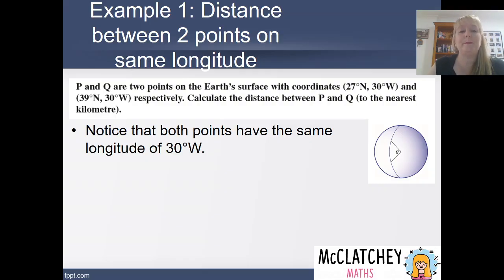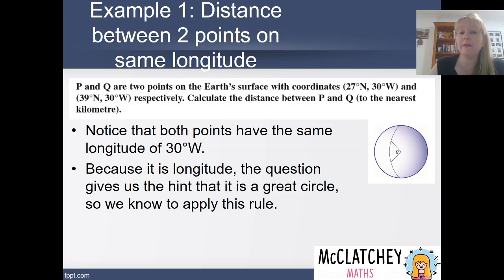So notice first of all that both of those points have the same longitude of 30 degrees west of the prime meridian. Now because it's longitude, that gives us our clue that we're going to apply the rule that we've just talked about. There's a different rule for the same latitude, so we need to bear that in mind.